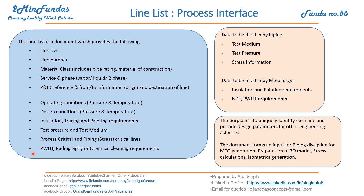The purpose of the line list is to uniquely identify each line and provide design parameters for other engineering activities. So to get these uniquely identified items, we have to refer to the line list only. This document forms a unique input for the piping discipline for MTO generation, preparation of the 3D model, stress calculation, and isometric generation.